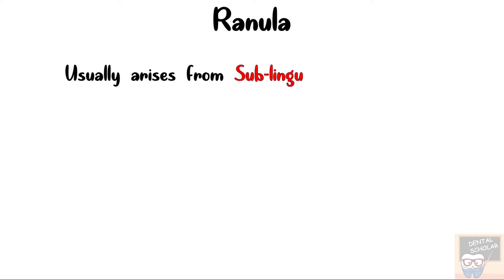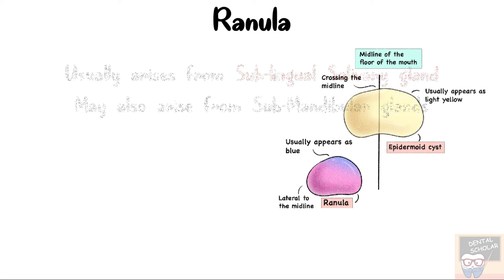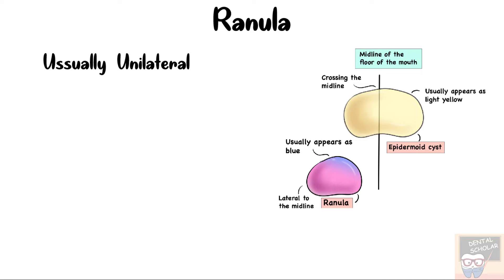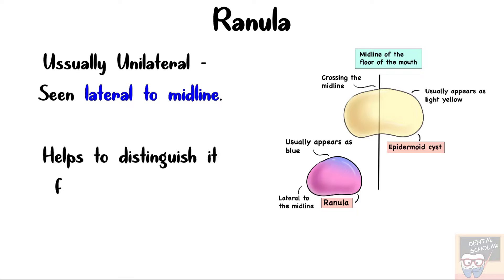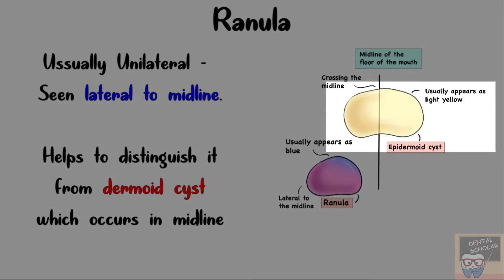These cysts usually arise from the sublingual salivary gland but they may also arise from the ducts of submandibular glands. These cysts are usually unilateral, that is they are seen lateral to the midline, and this feature helps us to distinguish them from dermoid cysts which usually occur in the midline and appear slightly yellowish in color.